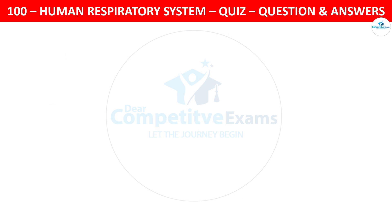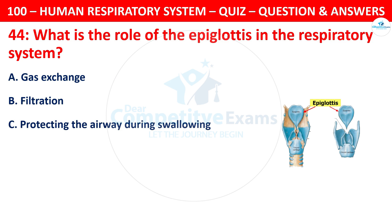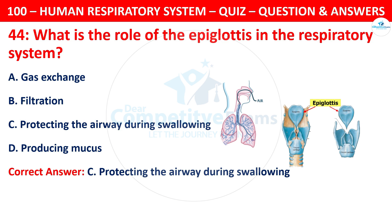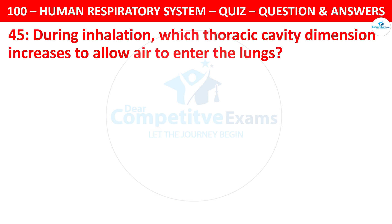Question 44: What is the role of the epiglottis in the respiratory system? The options are: gas exchange, filtration, protecting the airway during swallowing, or producing mucus. The correct answer is C — protecting the airway during swallowing. The epiglottis covers the trachea during swallowing to prevent food and liquids from entering the airway.